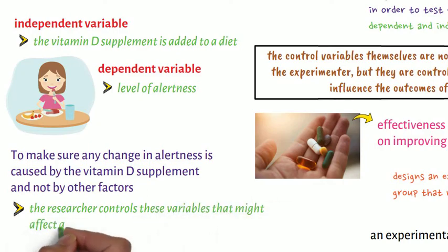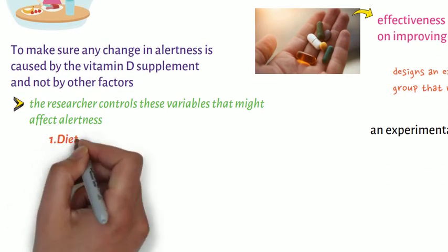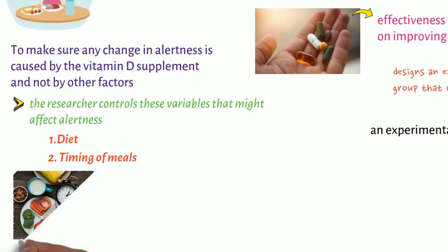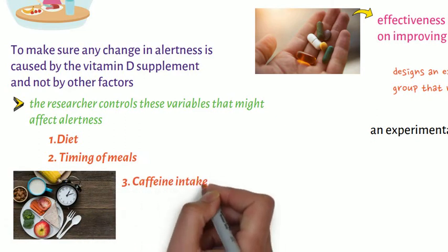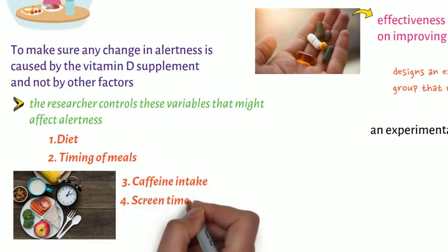First, diet. Second, timing of meals. Third, caffeine intake. And fourth, screen time.